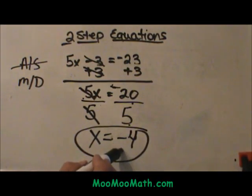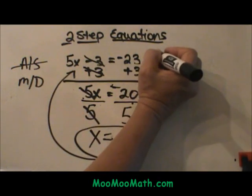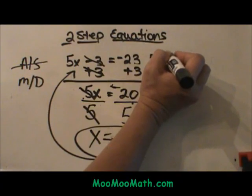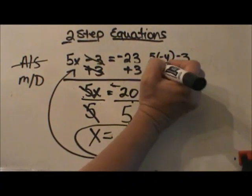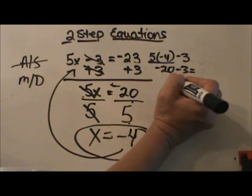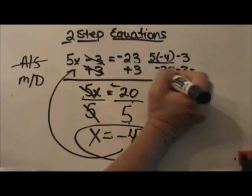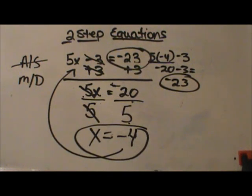You can take this answer and plug it into the original equation to do a check. So let's plug it in: 5 times negative 4 minus 3. Well 5 times negative 4 is negative 20 minus 3. Same signs you add and keep the sign, so negative 23 is the answer and that is what we started with. So this one checks out.